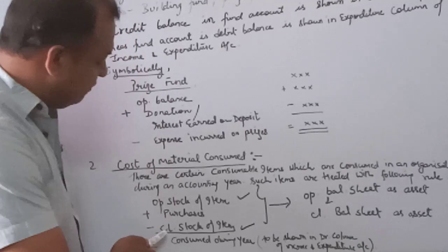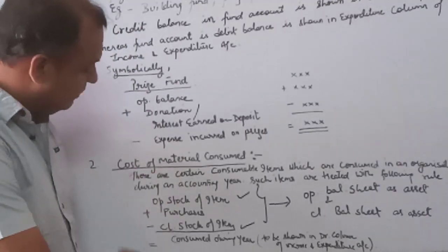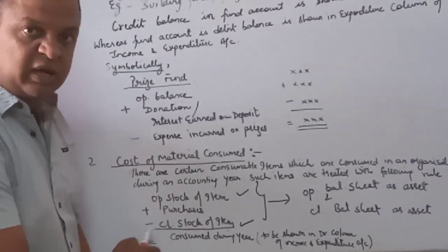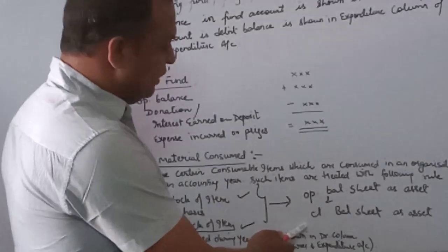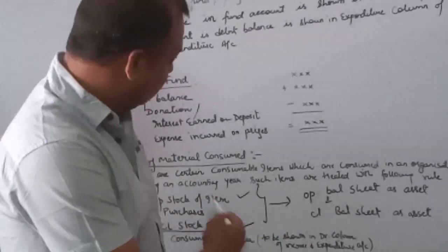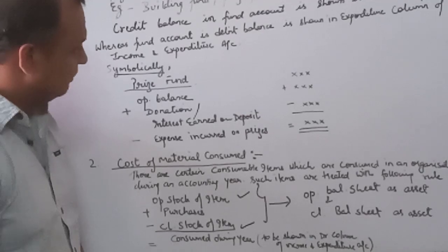When such information is given, the treatment will be made in the income and expenditure as well as in the balance sheet to conclude with the balances of consumable item.